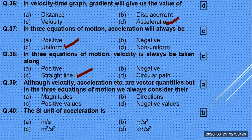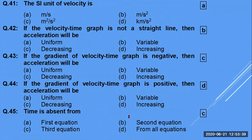The SI unit of acceleration is meters per second squared. The SI unit of velocity is meter per second. If the velocity-time graph is not a straight line, the acceleration is variable. If it is a straight line, the acceleration is uniform. If the gradient is negative, the acceleration is decreasing — deceleration.